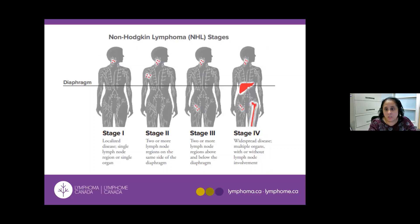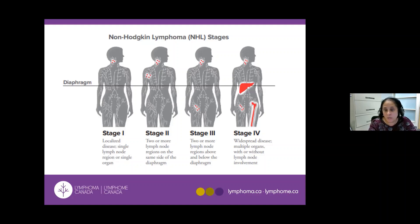Staging is based on where the lymphoma is located. Stage 1 is disease on one side, like one side of the neck. Stage 2 involves both sides of the neck or neck and armpit, but all on one side of the diaphragm. Stage 3 involves lymph nodes above and below the diaphragm — for example, neck and groin. Stage 4 is disease outside the lymph nodes, such as the liver or bone.